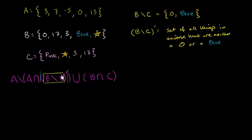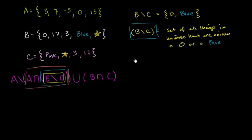We've figured out all of this so far. Now we want to find the intersection of A and this business — the intersection of A and the absolute complement of (B minus C). So it's going to be A intersected with the set of all things in the universe that are neither a 0 nor a blue. Essentially, the elements have to be in set A and also in the set of all things that are neither a 0 nor a blue.